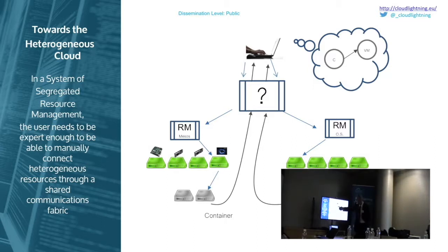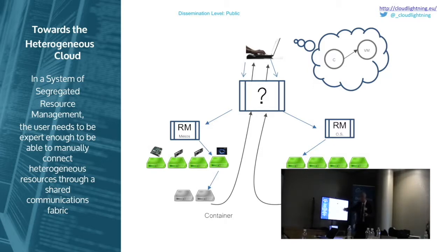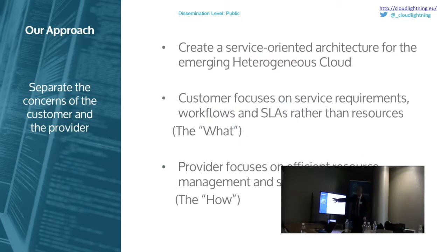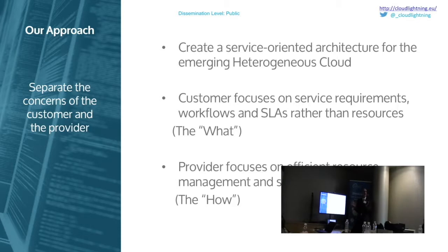That's kind of where we started. At the moment, this is a little nebulous, because there are services like Amazon Web Services that give access to accelerators as a kind of platform as a service. Remember, we started three years ago and things are evolving faster now. So our idea was to create a service-oriented architecture for the emerging heterogeneous cloud, where the customer focuses on what they want to do, and the provider focuses on how it should be done. That was one perspective of our work — I could give this talk from about ten different perspectives.